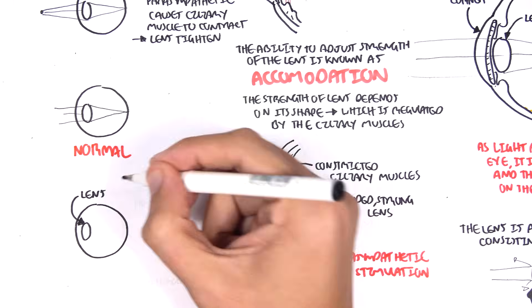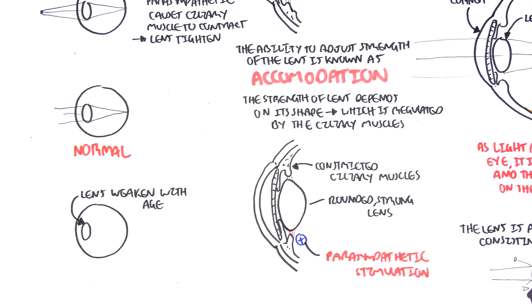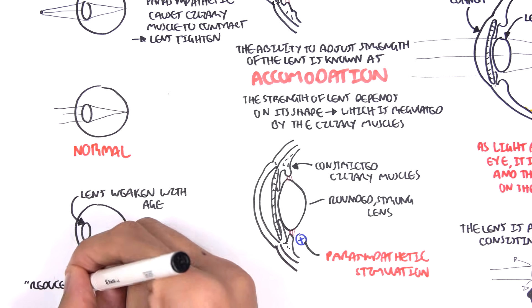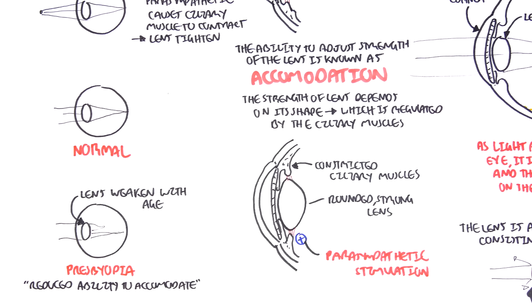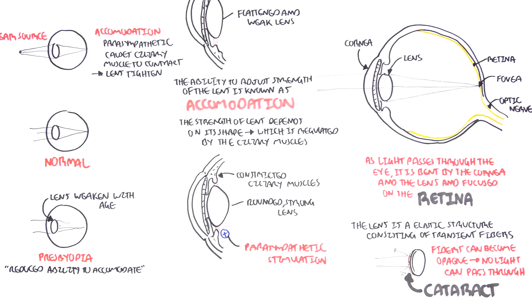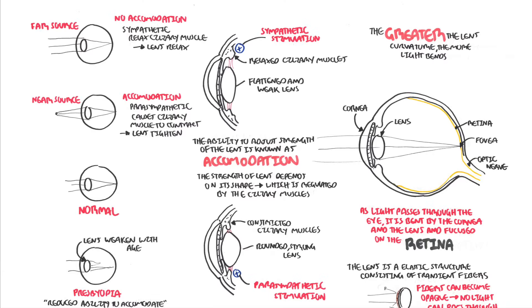There is a condition where the lens changes with age. This is known as presbyopia, and this results in a reduced ability to accommodate. Thus, light is refracted everywhere and doesn't really hit the retina, and so vision becomes blurry.